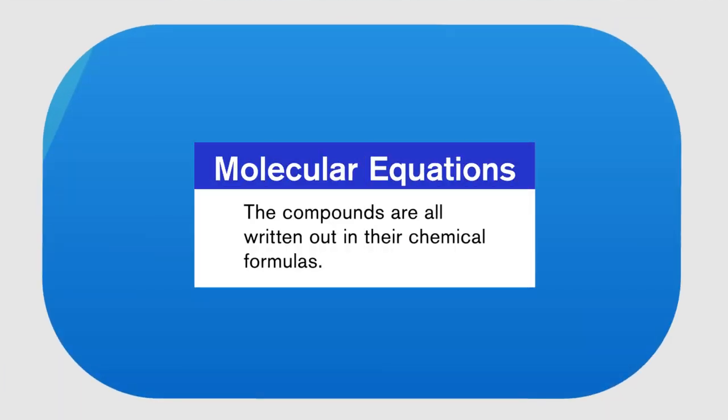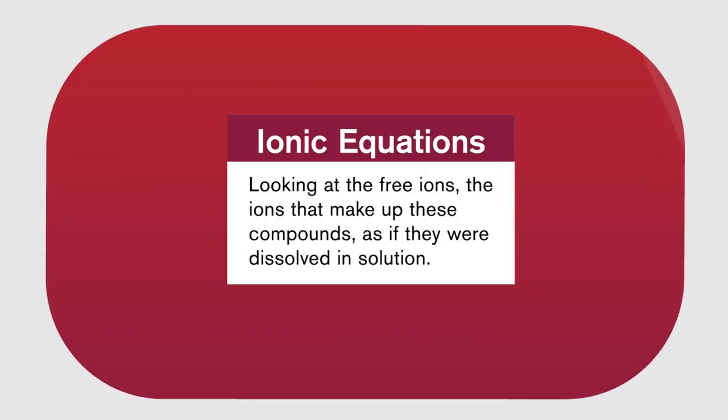In chemistry, we can view reactions with ionic compounds in two ways. There's molecular equations, where the compounds are all written out in their chemical formulas — this is what we're used to seeing — but we can also look at their free ions, the ions that make up these compounds as if they were dissolved in solution. This view is the ionic equation.